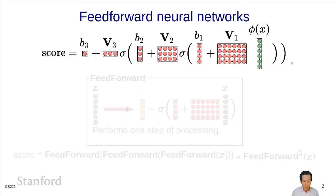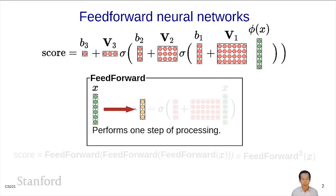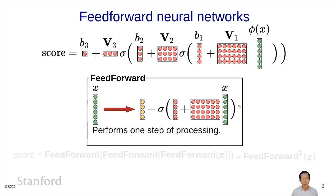What I want to do now is factor out this complex-looking expression into a reusable component, which I'm going to call feedforward. We're going to see a lot of these box diagrams, which represent functions that we can reuse and have a nice interpretation. The feedforward function takes in an input vector x and produces an output vector, which could be of a different dimensionality. What feedforward is doing is performing one step of processing: taking the input vector, multiplying by a matrix, adding a bias term, and applying an activation function. This is a function or program, but unlike normal programming, it's underspecified because the parameters are private to this function and are going to be set and tuned later via backpropagation.